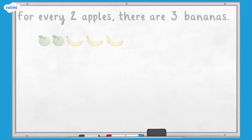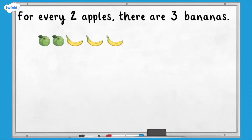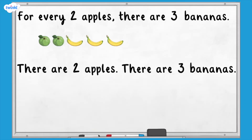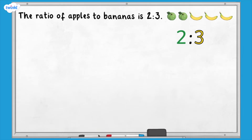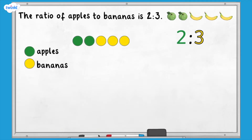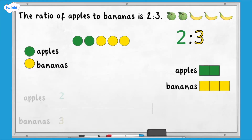In a fruit bowl there are two apples for every three bananas. There are two apples and three bananas. The ratio of apples to bananas is two to three. Remember we use the ratio symbol, which is a colon between the numbers, and the parts stay in the same order as in the question. We could represent the ratio using counters, a bar model, or a double number line. You don't need to use all the representations, but can pick the one you find the easiest to use and understand.